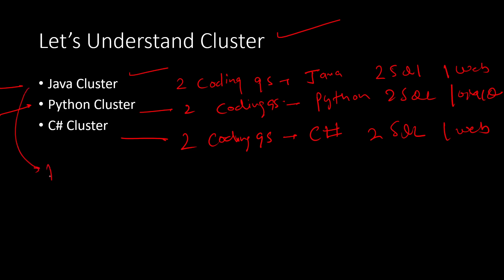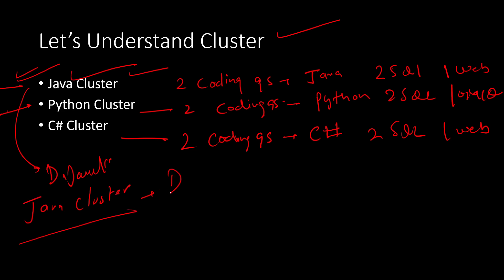The Java cluster is the default cluster. If you have not selected any cluster, you will be getting Java. The final selection depends upon Cognizant — suppose if you have failed the Python cluster, there are chances you will get Python or C# depending on what you chose. But majorly Java is the default and if you haven't chosen any cluster, most probably you will get Java. The final decision of which cluster to assign totally depends upon Cognizant.